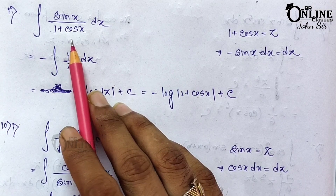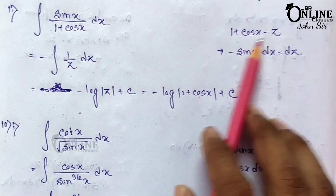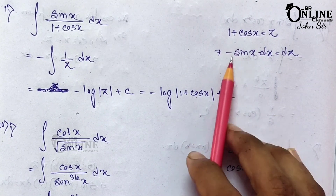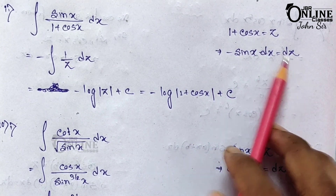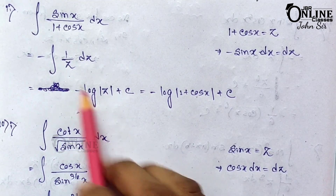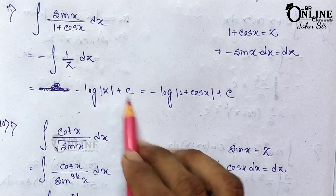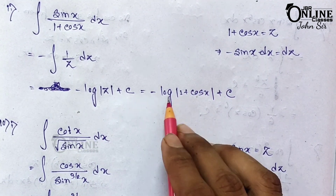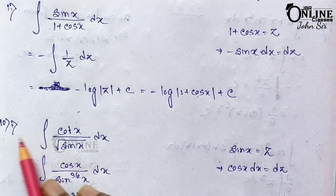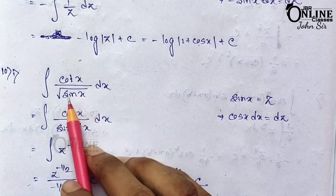Problem 9.2: ∫sin x / (1 + cos x) dx. Let 1 + cos x = z. The derivative of 1 is 0, and of cos x is −sin x, so −sin x dx = dz, meaning sin x dx = −dz. The integral becomes −∫(1/z) dz = −log z + C = −log(1 + cos x) + C.